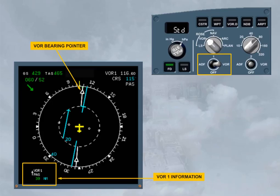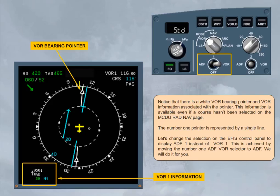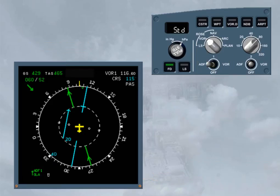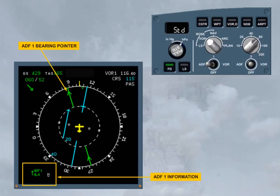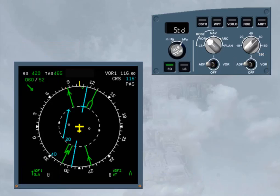This is achieved by moving the number 1 ADF VOR selector to ADF. The white VOR bearing pointer has been replaced by a green ADF bearing pointer. The VOR information on the bottom left of the display has been replaced by ADF1 information. Notice that the selection of the pointer has not removed the deviation information for VOR1. We will now display the ADF2 bearing pointer by selecting ADF VOR selector 2 to ADF. The ADF2 bearing pointer is now displayed, represented by a double lined arrow.